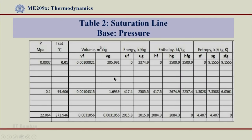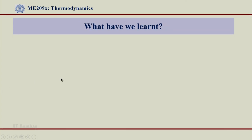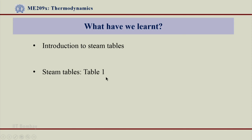The snippet of Table 2 goes from triple point pressure to critical point pressure. At 0.1 MPa, which is close to atmospheric pressure, the corresponding T_sat is 99.606 degree centigrade—close to the boiling point at atmospheric pressure. At the critical pressure of 22.064 MPa, T_sat is the critical temperature of 373.946 degree centigrade. So, what have we learned? We saw Table 1 and Table 2 from the steam table and understood the concept of temperature as a base and pressure as a base. Thank you very much.